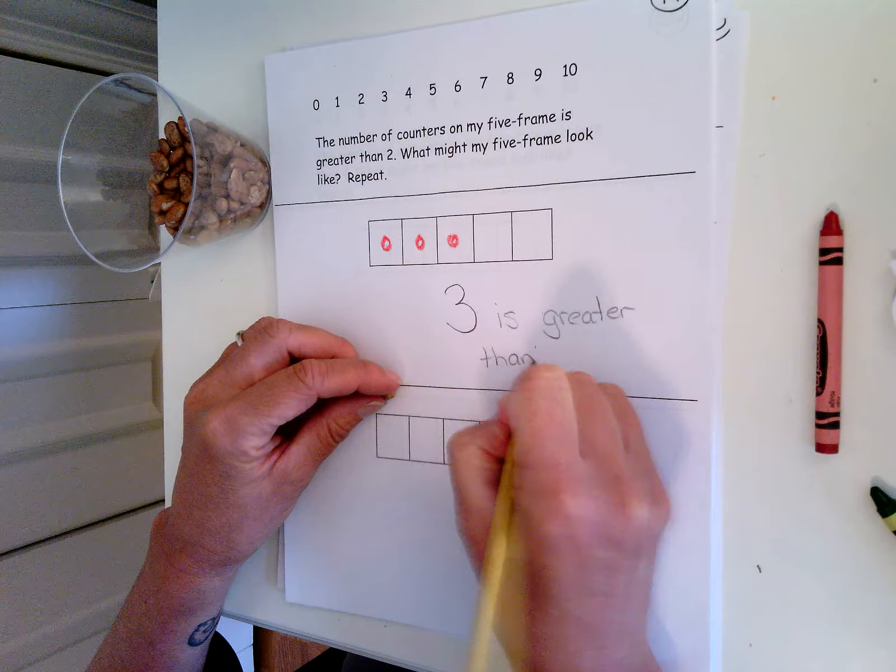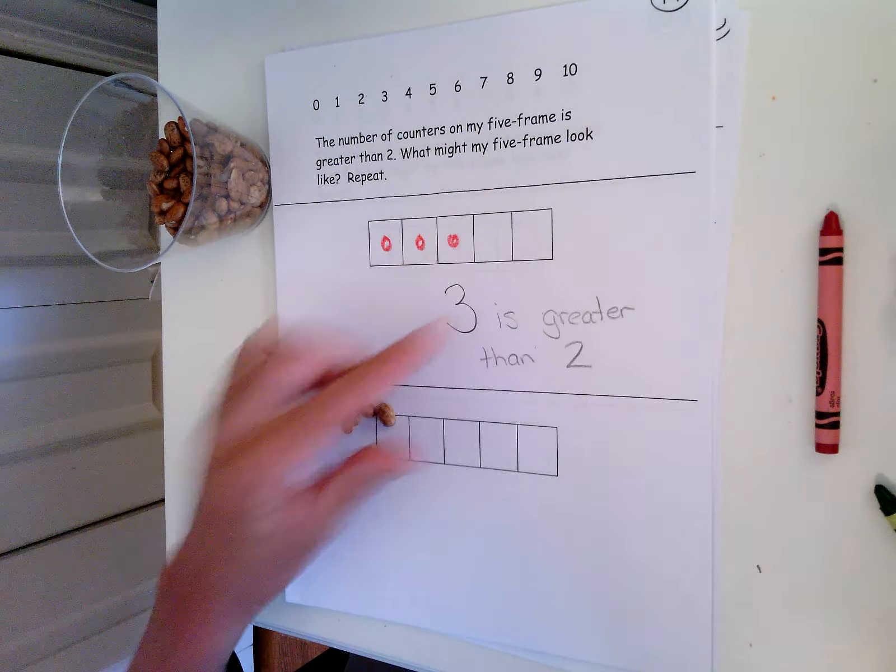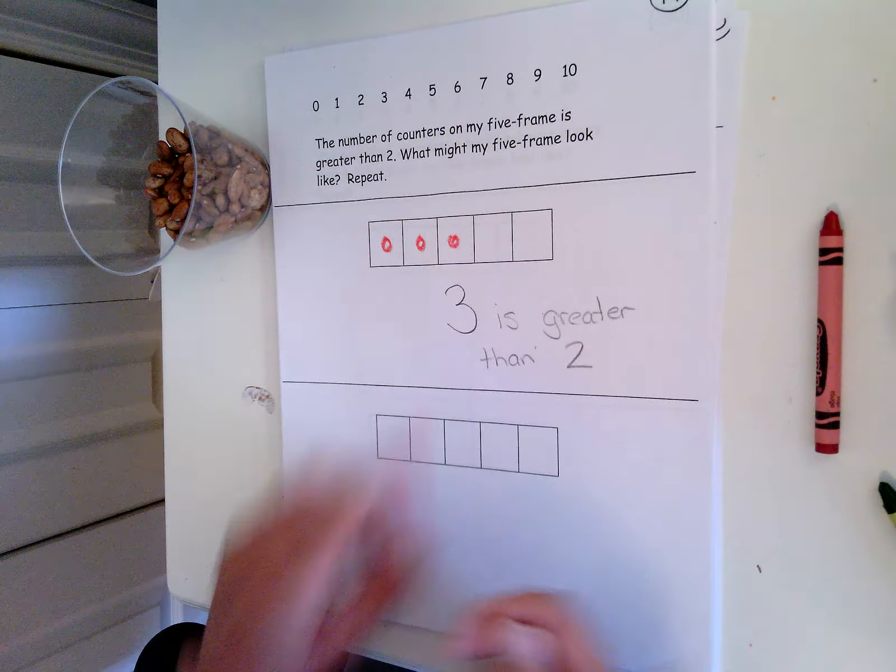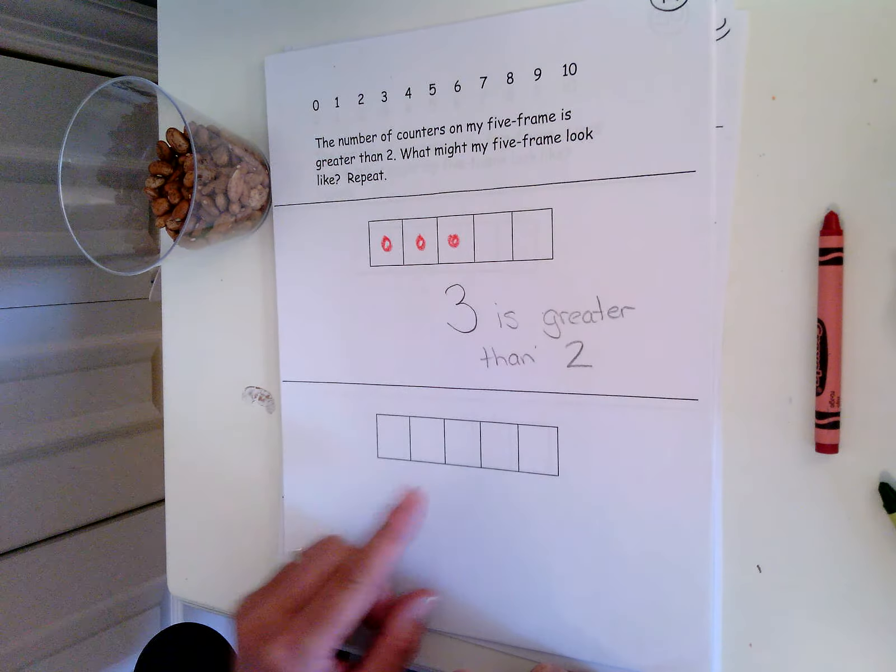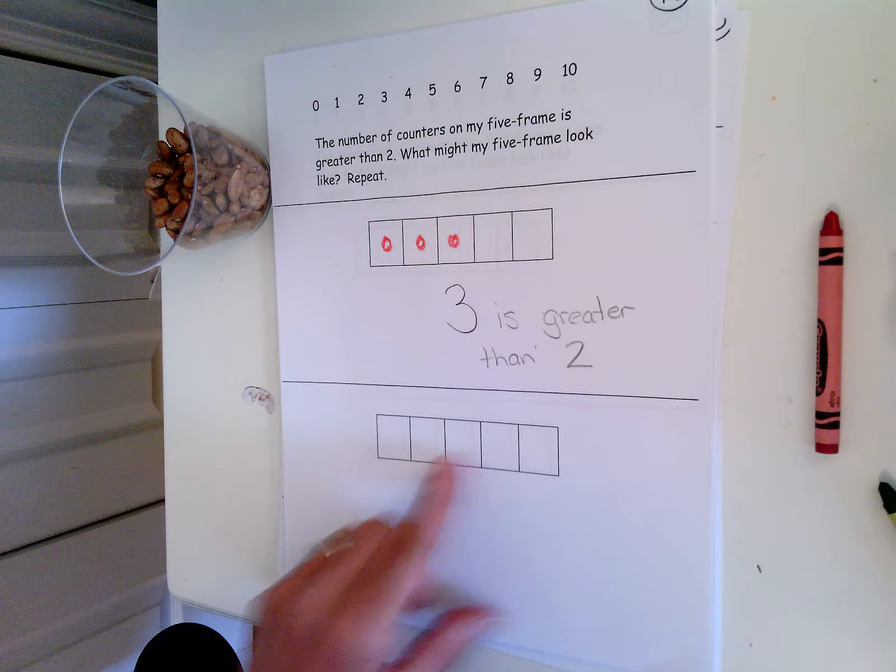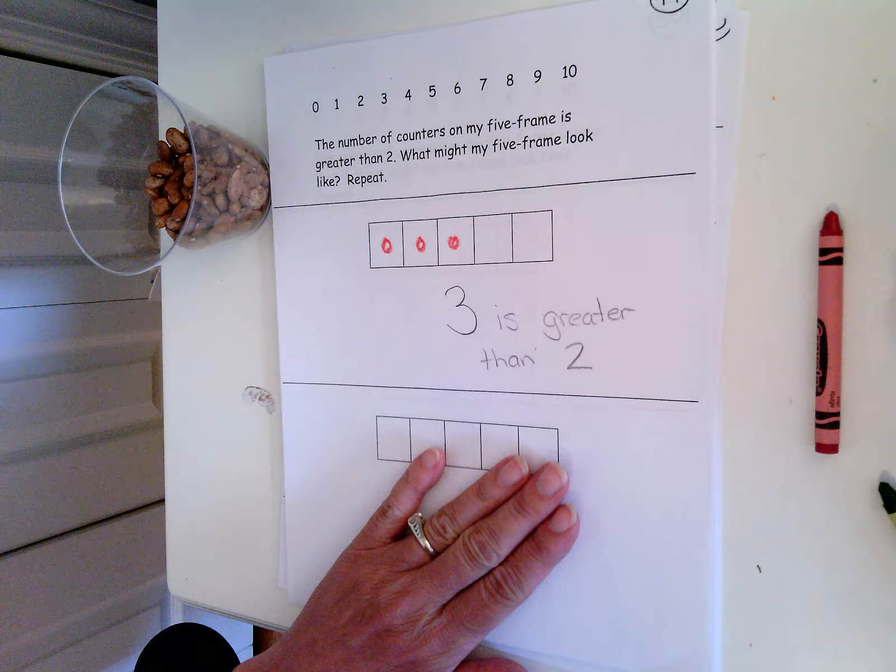You don't have to write all those words, but you could, but you need to write the number. So that was one number that could be greater than two, but there's other numbers that could be greater than two. I want you to figure out another number on your five-frame that's greater than two and write it here. Good job.